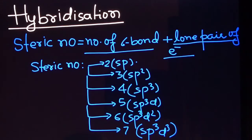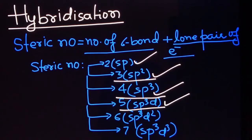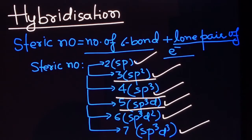If the steric number is 2, then the hybridization of the central atom will be sp. If it is 3, then hybridization will be sp2. If it is 4, then sp3. If it is 5, then sp3d. If it is 6, then sp3d2. And if it is 7, then it will be sp3d3. Now let's proceed and find the hybridization of various molecules. First is I₃⁻.